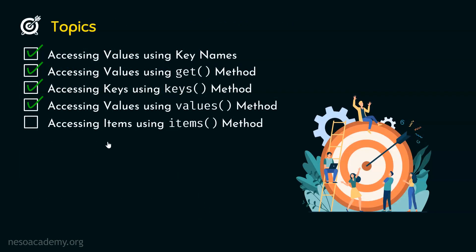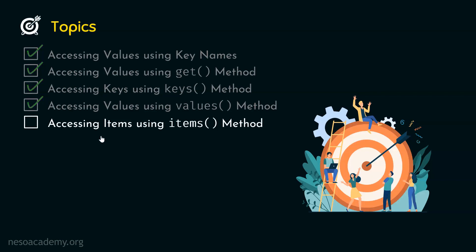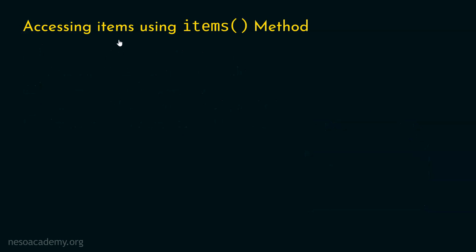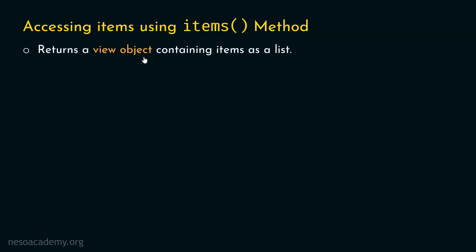Now let's move on to the next topic: accessing items using the items method. An item is a key-value pair of a dictionary. If we are interested in all key-value pairs, we can use the items method. The items method also returns a view object, but it contains items as a list. The syntax is: first the name of the dictionary, then dot, then items.